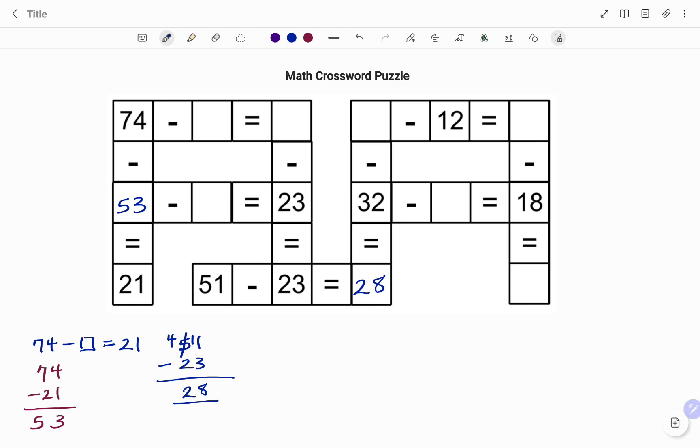Then also, I'm going to go to the next row. Like I mentioned earlier, I'm working in no particular order. I have 53 minus box equals 23. So to get the value of my box, I have 53 take away 23 will give me 3 minus 3 is 0, 5 minus 2 is 3. So I have 53 minus 30 will give me 23.